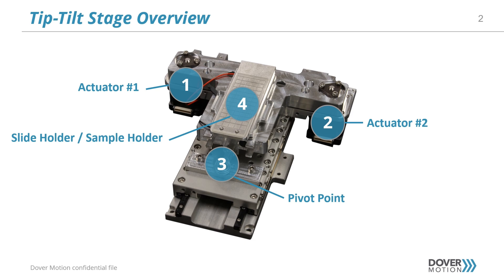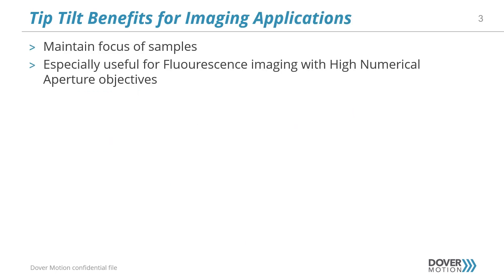The tip tilt mechanism is typically mounted on top of additional axes, usually an XY stage as shown here in item number five. Typical tip tilt stages for microscopy applications offer just a few degrees of rotation. This is to compensate for minor variations that would make a sample imaging plane outside of the desired depth of field for the optical assembly.